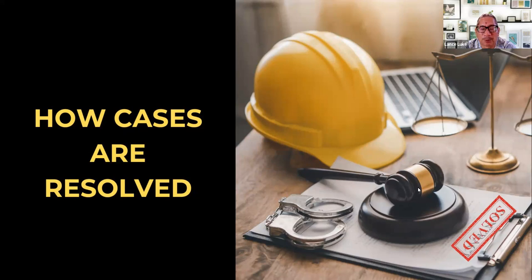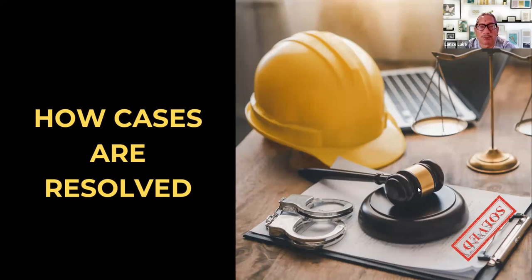Obviously when it rains, water flows downward — and in this case downward was into the house. Both the architect and contractor were responsible. The owner gave me the architect's name, then the contractor's name, and it turned out to be the same name. It was a design-build contract, meaning the designer and contractor are the same entity. In this situation that wasn't ideal because you only have one party to sue instead of two.